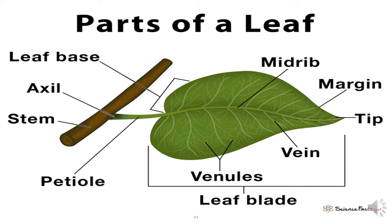Next is the leaf lamina or leaf blade. The flat portion of the leaf is called the leaf lamina or leaf blade. Running through the middle of the flat portion is the midrib. So these were the parts of a leaf.